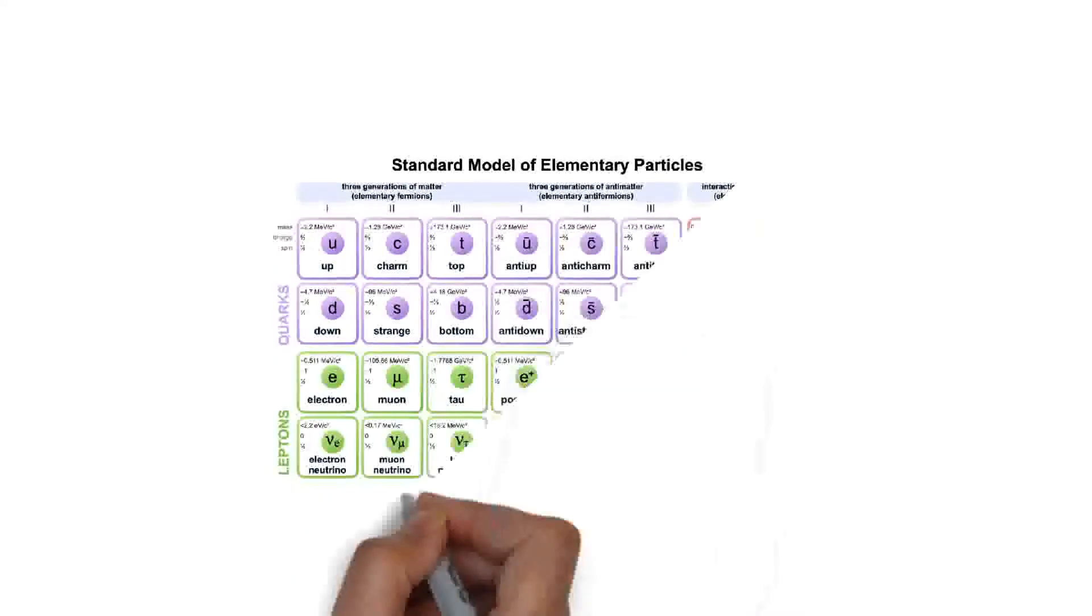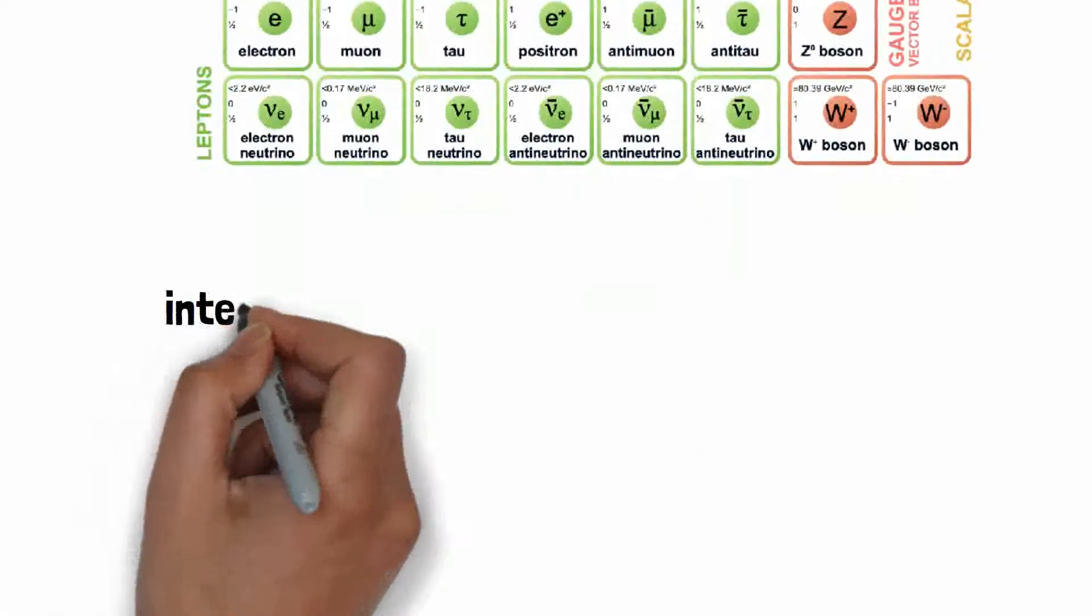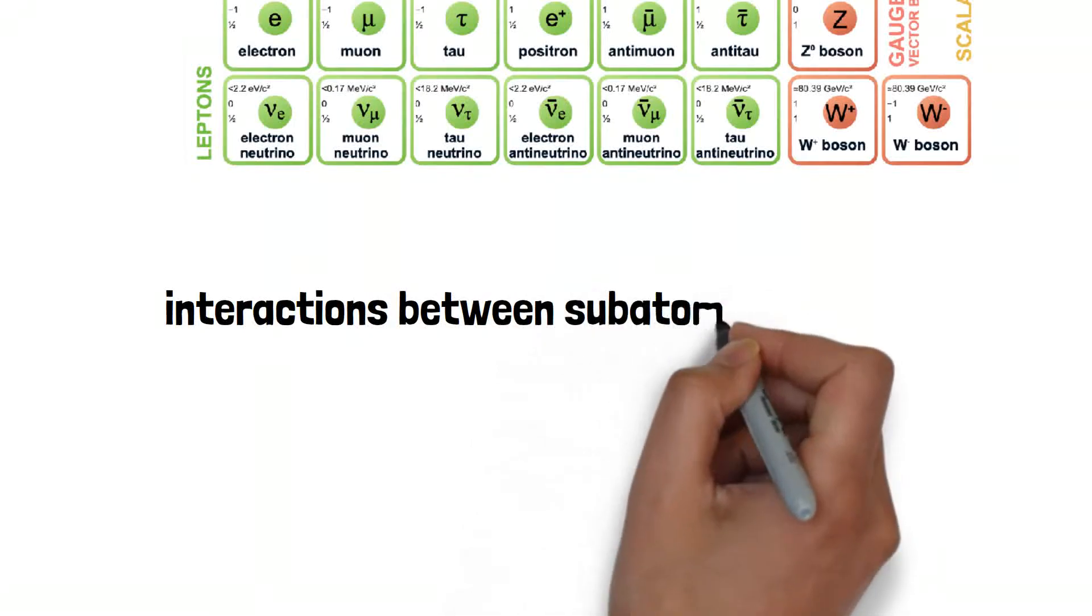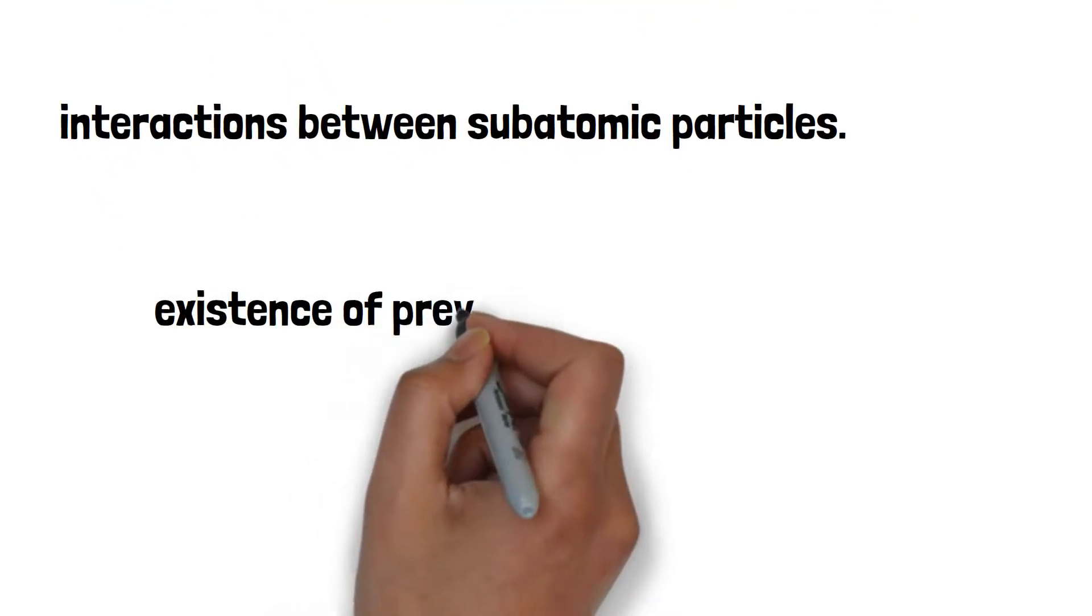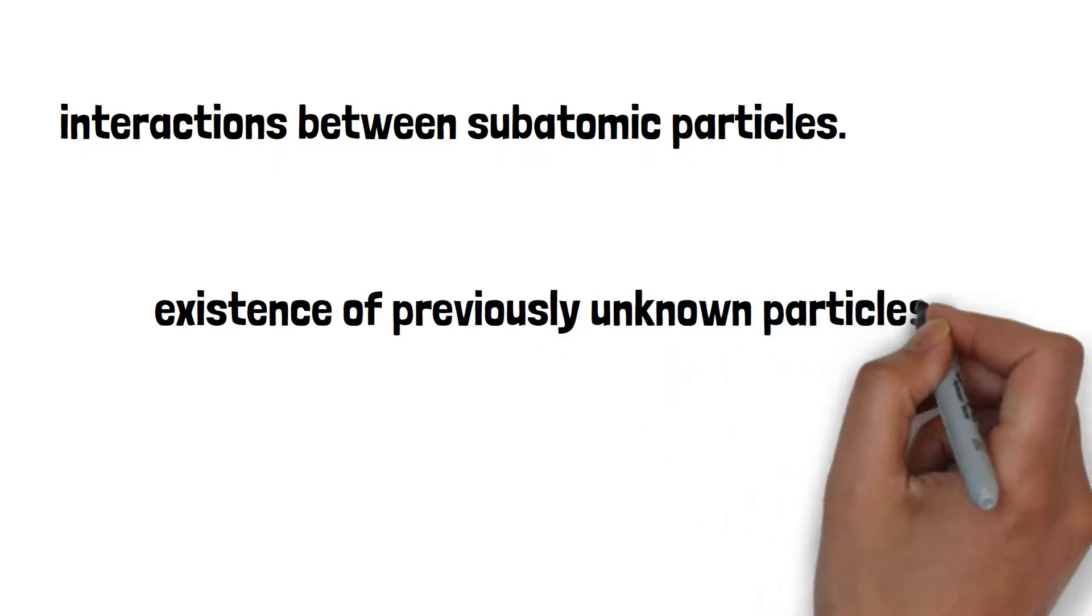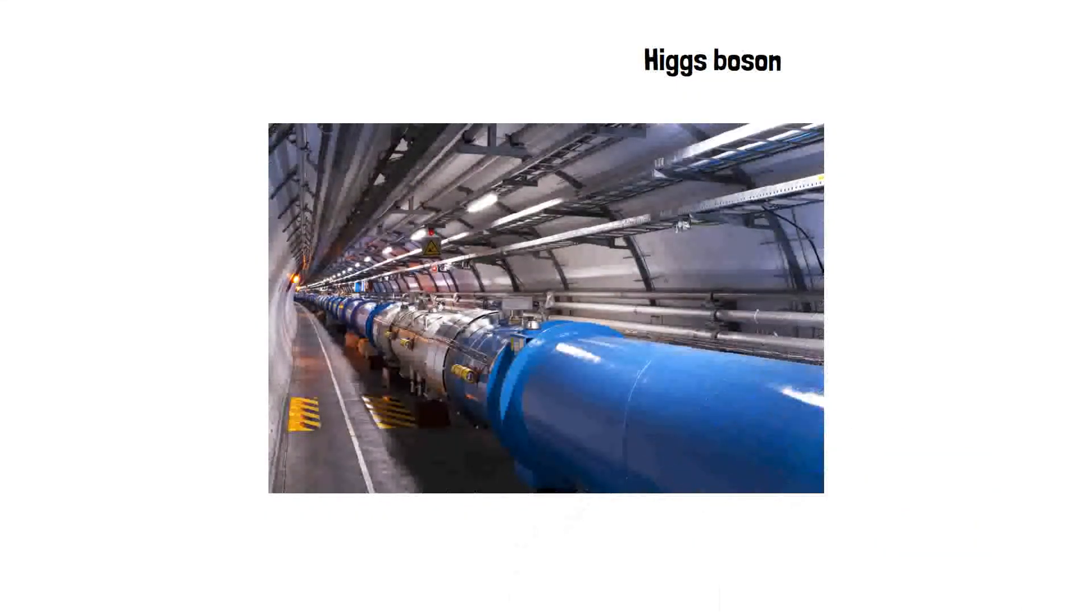We do have something called the Standard Model of Particle Physics, which is very good at explaining the interactions between subatomic particles. The Standard Model has also been used to predict the existence of previously unknown particles. The last particle to be found this way was the Higgs boson, which LHC researchers discovered in 2012.